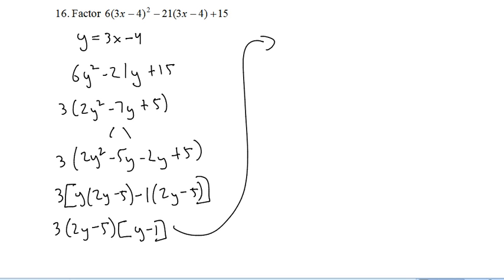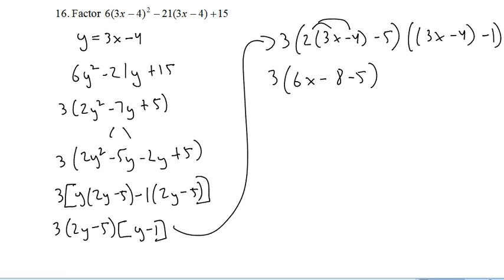Now, because I had x's in my original question, I need to get my x's back in there. I need to multiply that 2 through, and negative 4 and negative 1 over here is minus 5. And just a little more cleaning up, negative 8 and negative 5 is negative 13. And there's our factored form. I can't break that into any more things multiplied together.